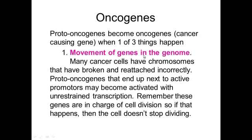Sometimes you can have something called a transposon or a jumping gene, which actually means a piece of a chromosome is broken off and reattached incorrectly someplace else. If a proto-oncogene is broken and reattached next to an active promoter region, then the proto-oncogene can be activated and cause unrestrained transcription, which would mean the cell division would never stop. So sometimes that type of mutation can occur.